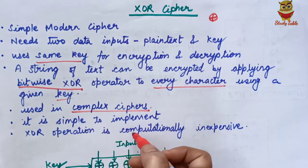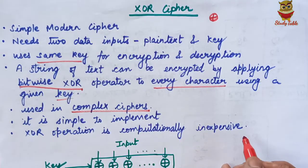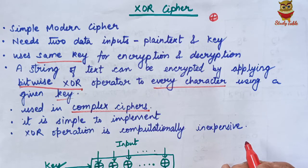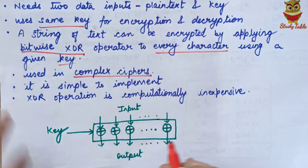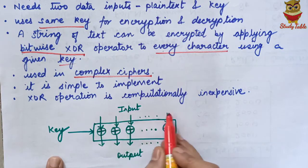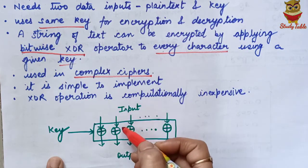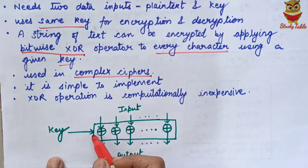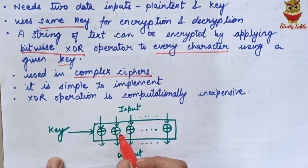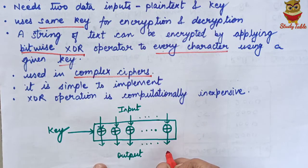This is the diagrammatic representation of XOR cipher. The input is plain text, the key is applied, the XOR operator is applied to the input and key, and the output is our cipher text.